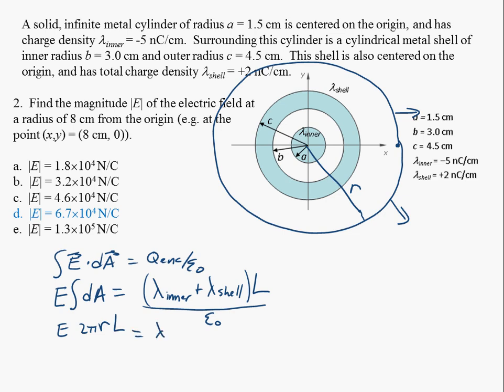So I can solve this here, replace my lambdas. Sorry that it's getting a little bit messy here. Notice that my L's are going to cancel out. And I get the familiar expression, electric field due to this infinite cylinder is just going to be equal to the total charge enclosed, and then I just divide that by 2 pi r epsilon naught.